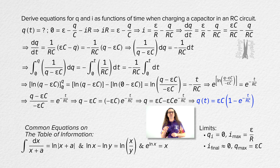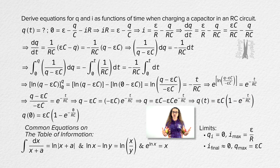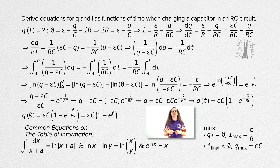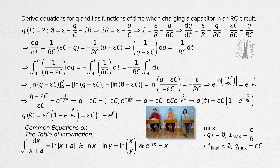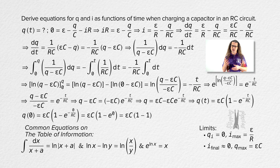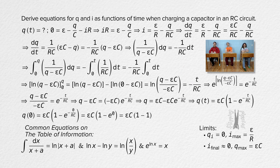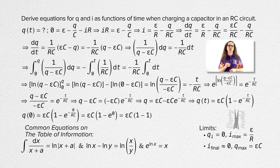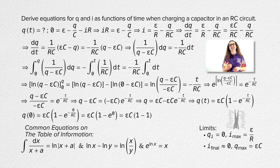Notice this equation fits our limits for charge. When time t equals zero, we get e to the power of zero in the equation. E to the power zero equals one, so when time equals zero, this equation shows that the charge on the capacitor is zero.